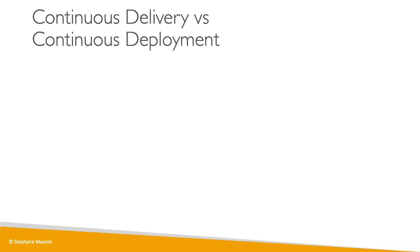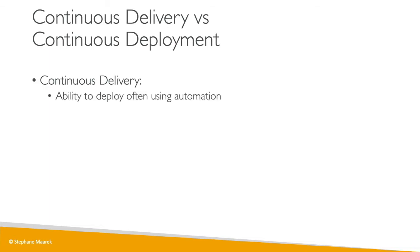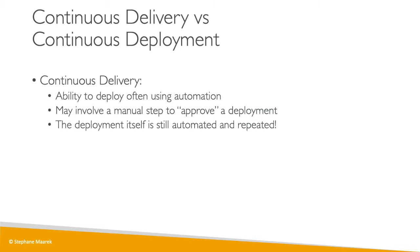CD can mean continuous delivery or continuous deployment — you need to know the difference. Continuous delivery means deploying often using automation, but it may involve a manual step. For example, if you need to approve a production deployment, you would manually approve that step. Even though there is a manual step, the deployment itself is still automated, repeatable, and safe to do.